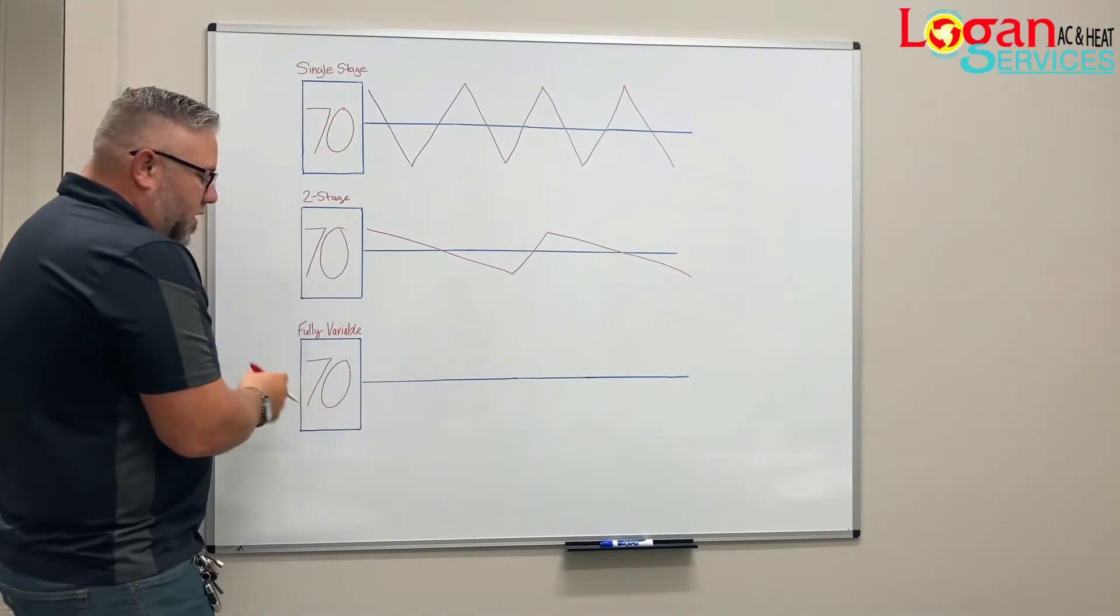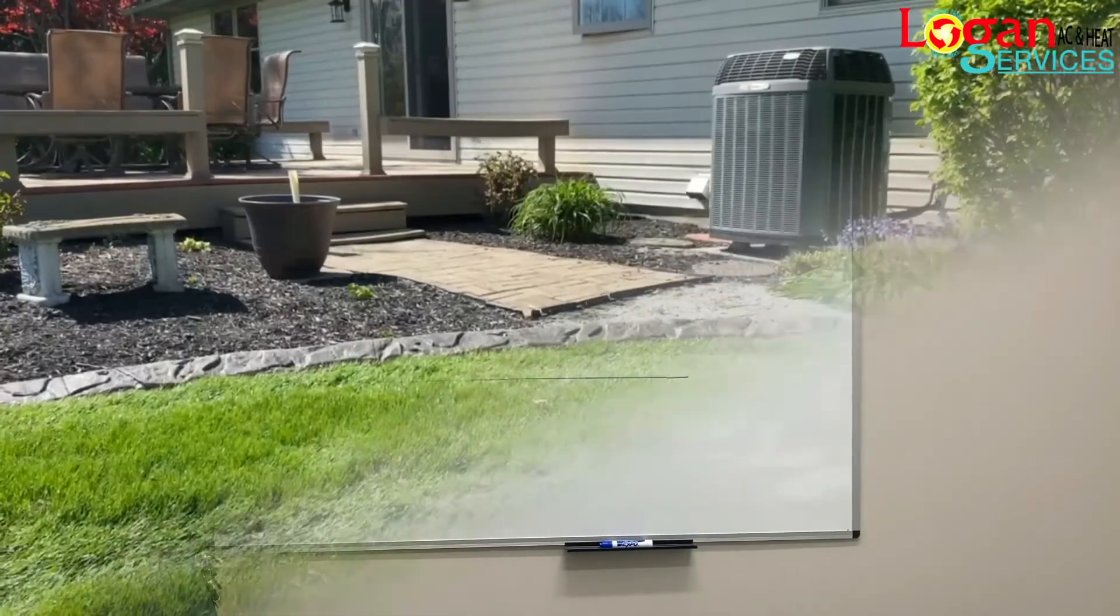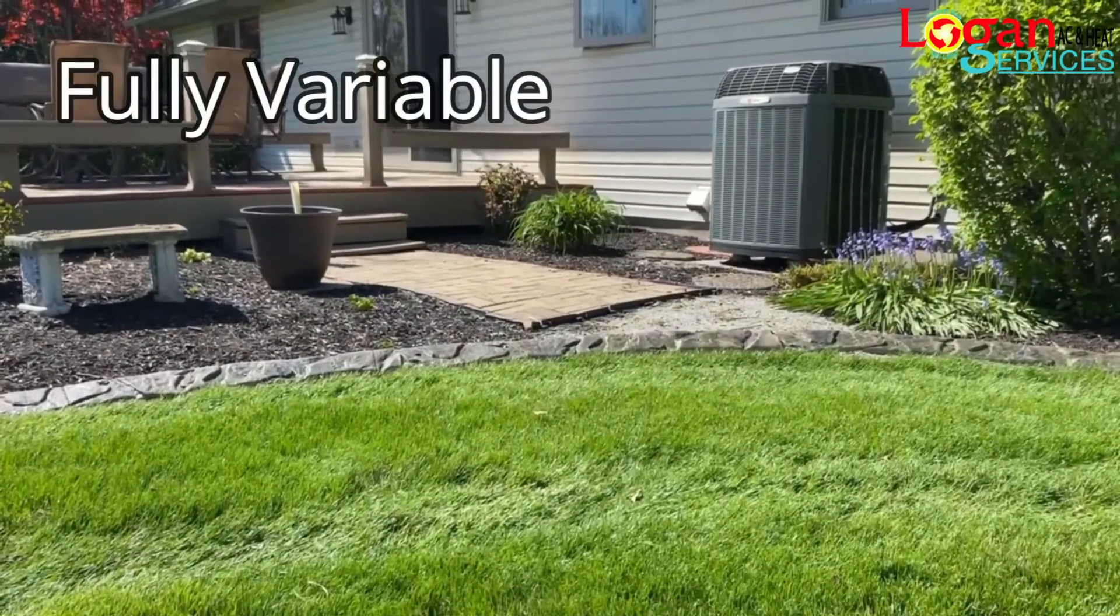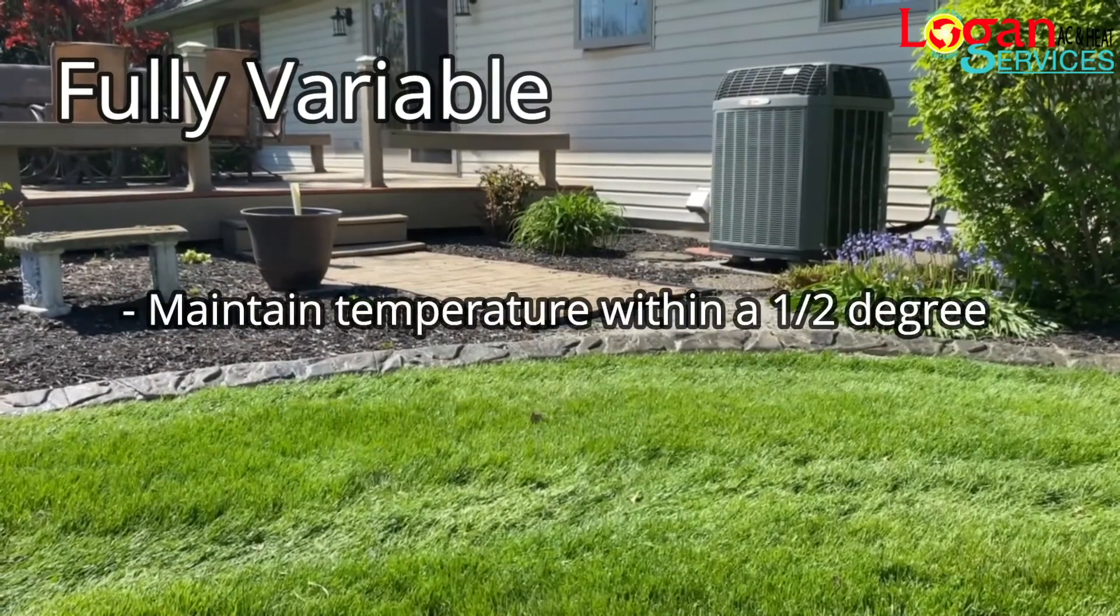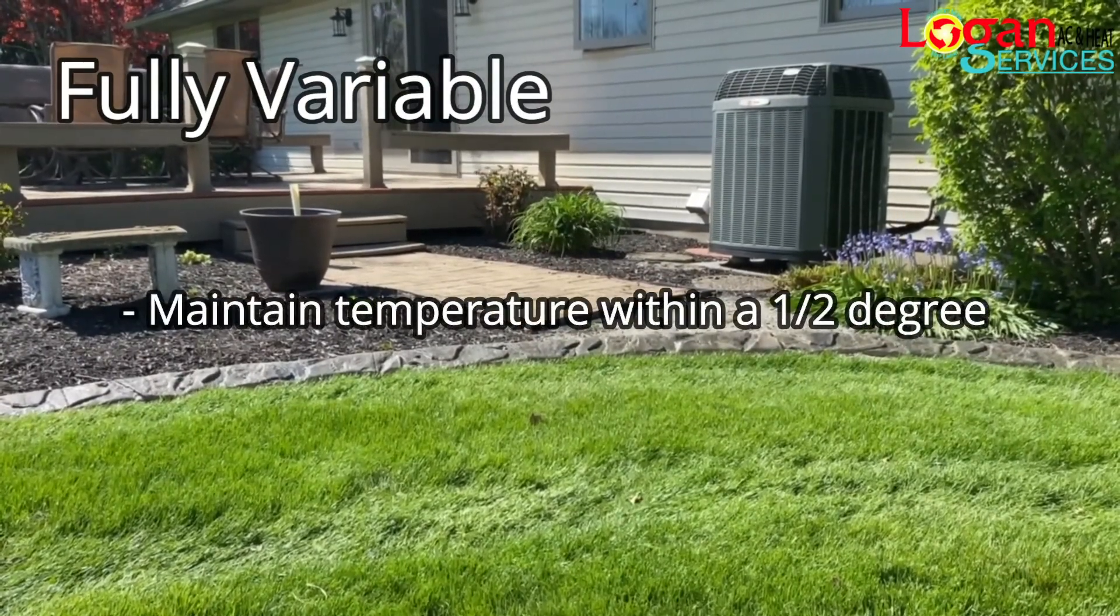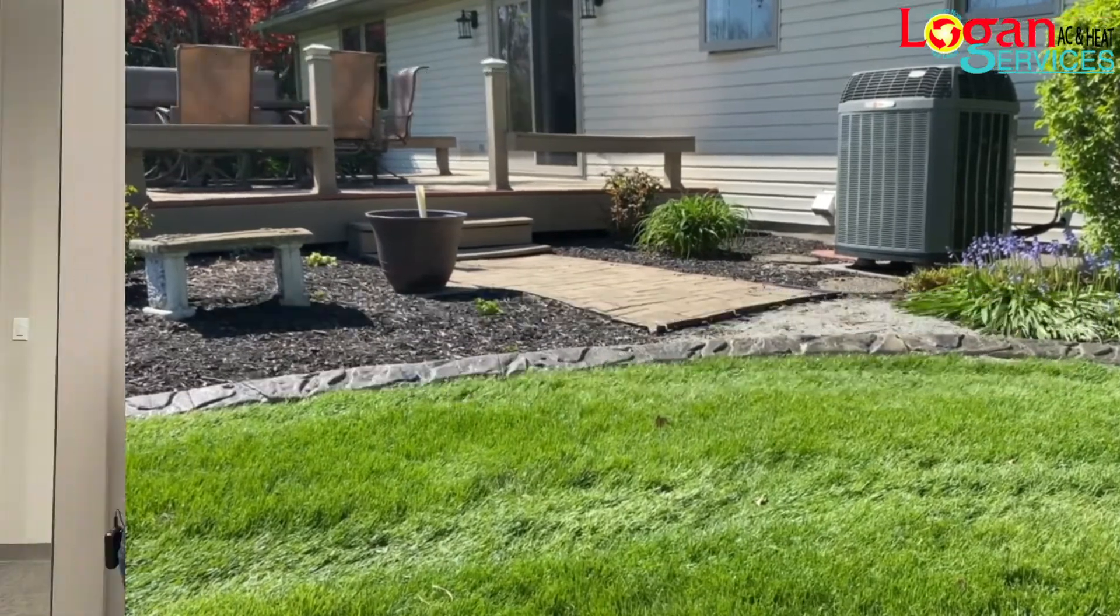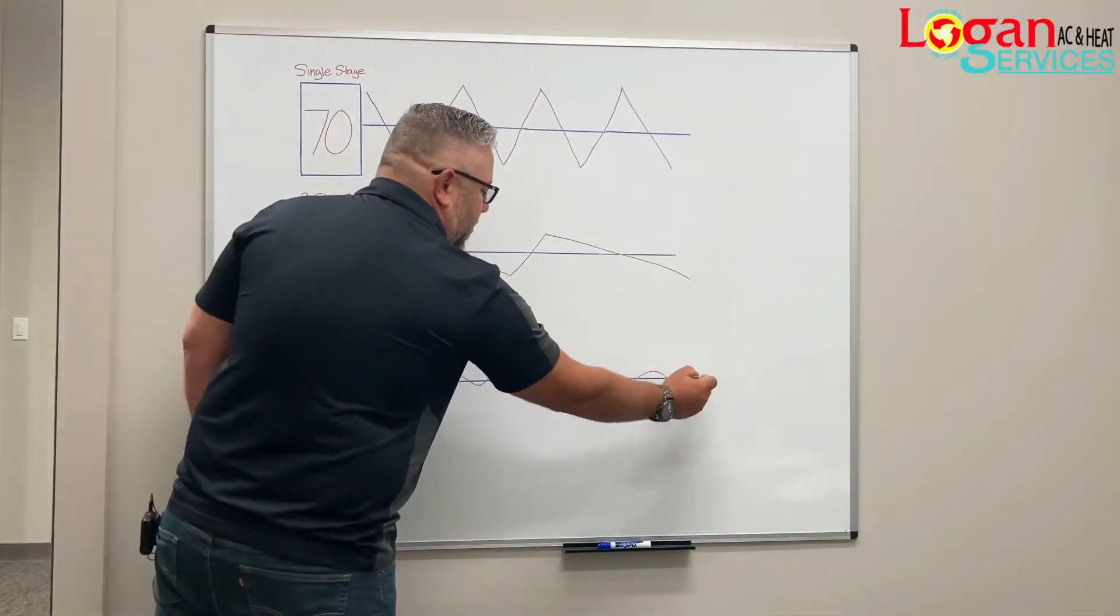From here, we would go up to what's called a fully variable. A fully variable unit will actually stay maintained at a temperature within a half a degree at all times and it will continuously run a very even temperature in your home.